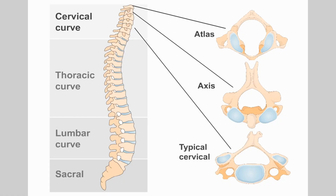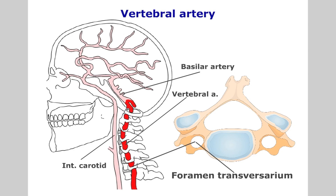Before proceeding with the examination of the cervical spine, let us review the structure. This spinal region is made up of seven vertebrae. The first two, the atlas and axis, are non-typical. Of note is the foramen transversarium, located within the transverse processes. These foramen allow passage for the vertebral arteries, veins and sympathetic plexus.